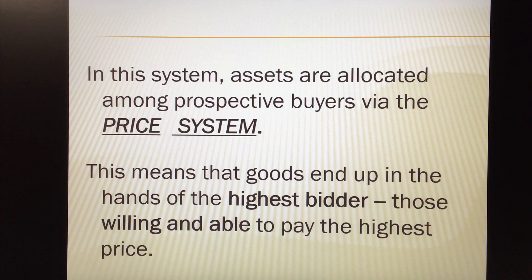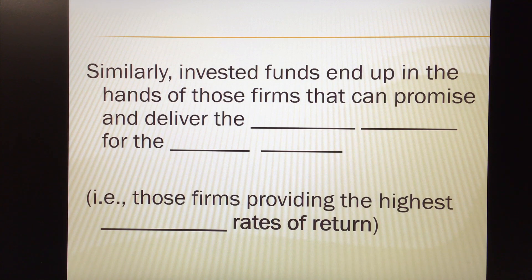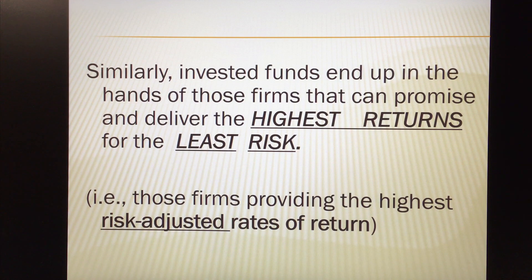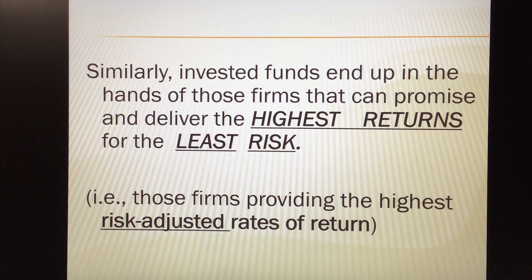In this system, assets are allocated among buyers via the price system. Goods end up in the hands of the highest bidder — those people both willing and able to pay the highest price. Similarly, invested funds end up in the hands of those firms that can promise and deliver the highest returns for the least risk. The two primary characteristics of any investment are risk and return. Returns we like — that's the benefit from investing our money. Risk we don't like; people are risk-averse. Invested funds end up in the hands of those firms able to provide the highest risk-adjusted rates of return — those most efficient in generating returns relative to investor expectations.